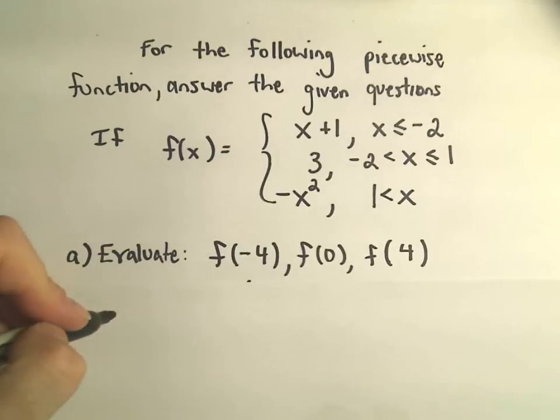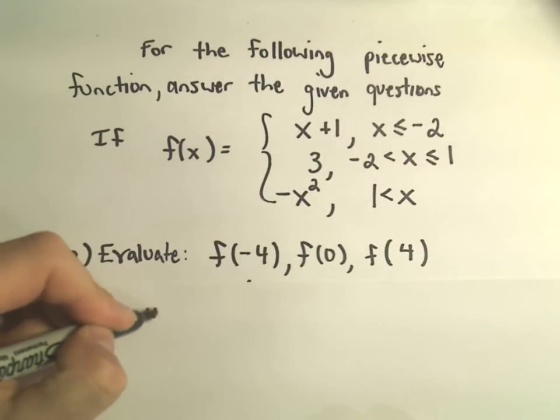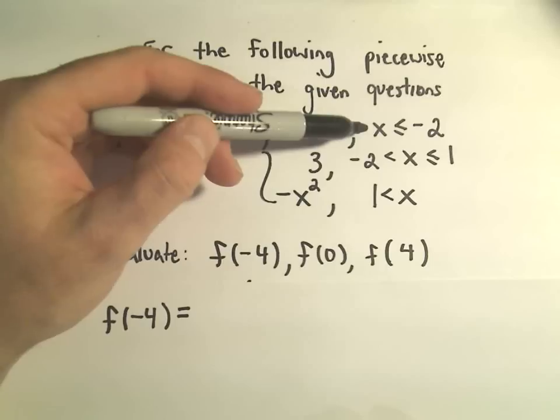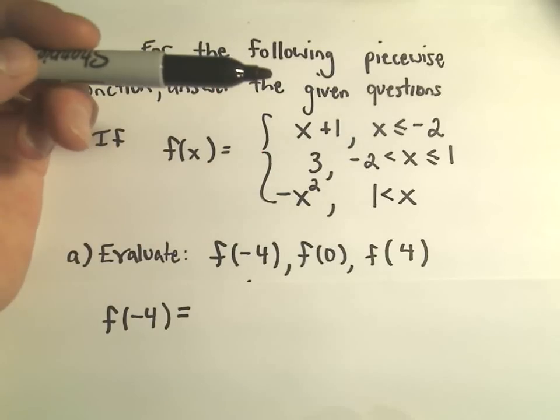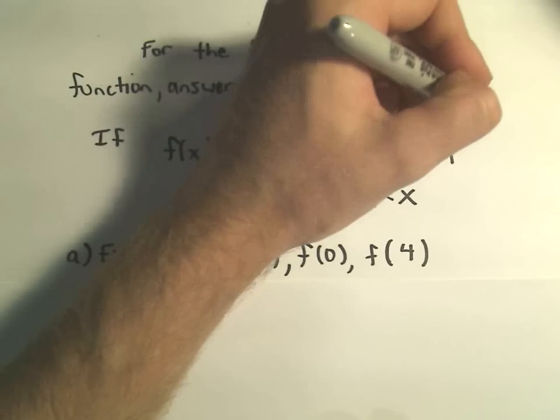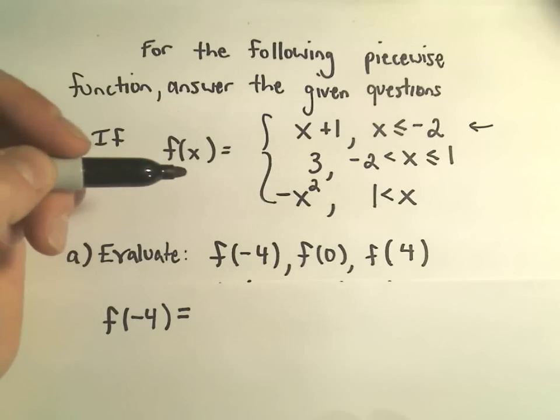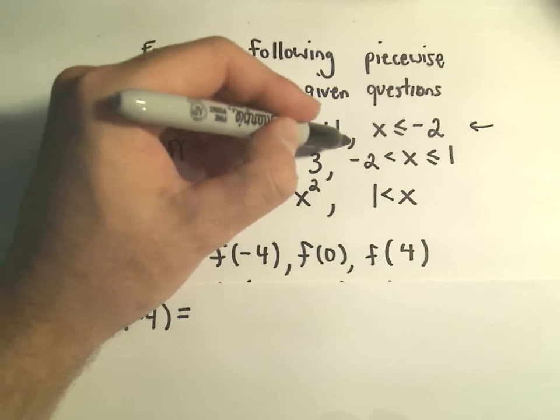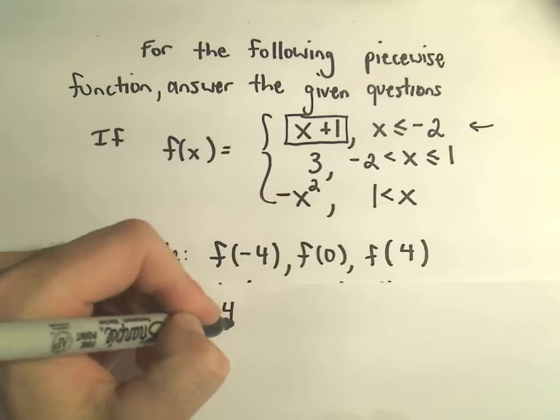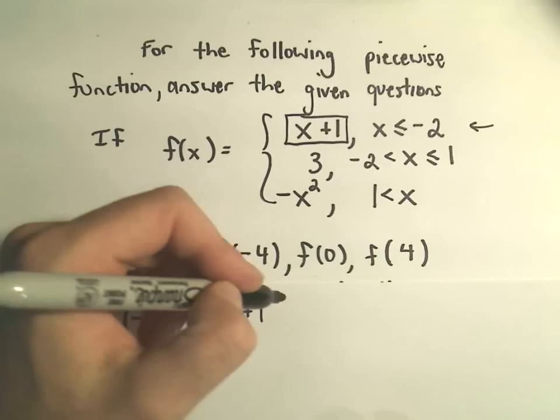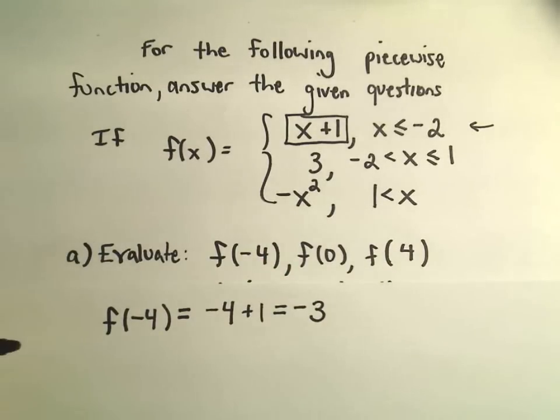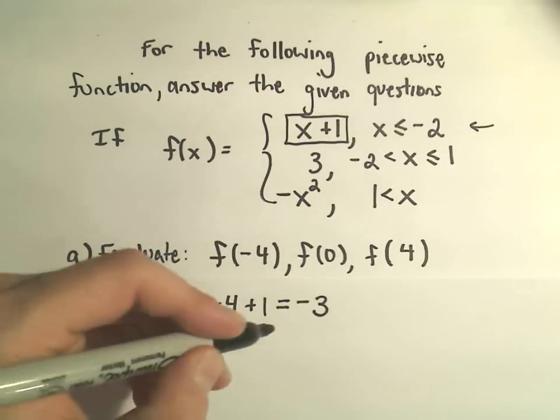So if they want us, for example, to evaluate f of negative 4, again, I think what interval of numbers does negative 4 belong to? Well, negative 4 is less than or equal to negative 2, so I would be using this first interval, which means I would be using the first formula. So it says everywhere there's an x, just plug in negative 4. Well, negative 4 plus 1 is negative 3, and that would be the value for f of negative 4.